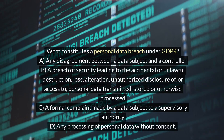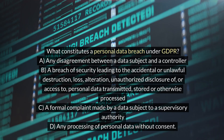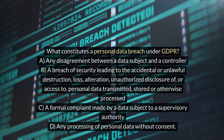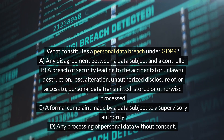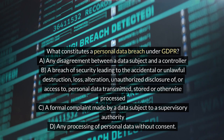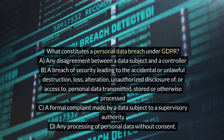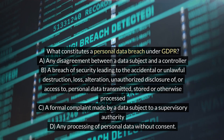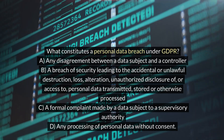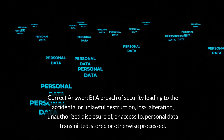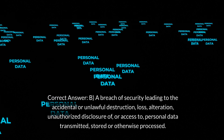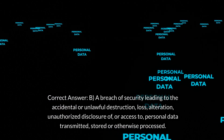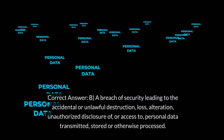What constitutes a personal data breach under GDPR? A. Any disagreement between a data subject and a controller. B. A breach of security leading to the accidental or unlawful destruction, loss, alteration, unauthorized disclosure of, or access to, personal data transmitted, stored, or otherwise processed. C. A formal complaint made by a data subject to a supervisory authority. D. Any processing of personal data without consent. Correct answer: B. A breach of security leading to the accidental or unlawful destruction, loss, alteration, unauthorized disclosure of, or access to, personal data transmitted, stored, or otherwise processed.